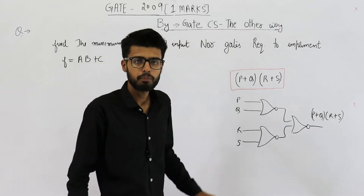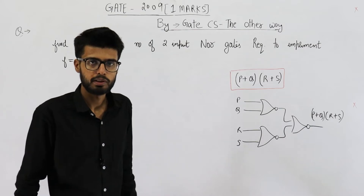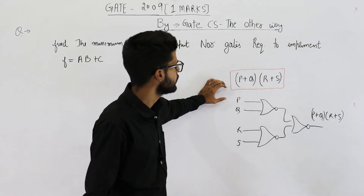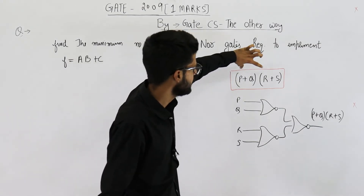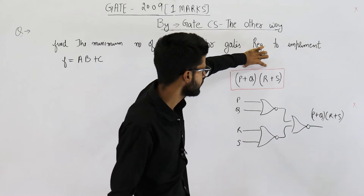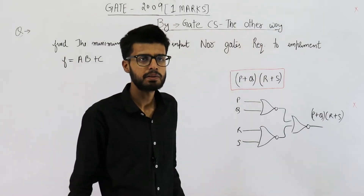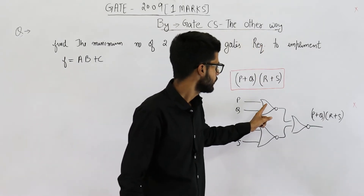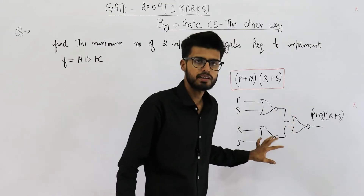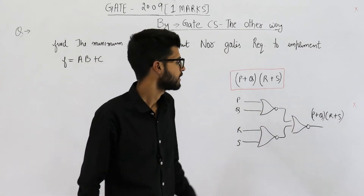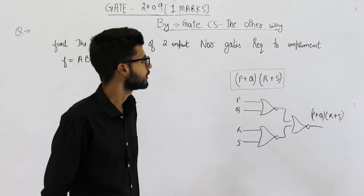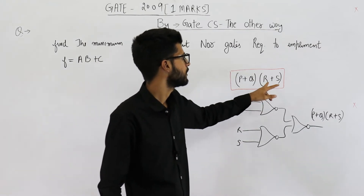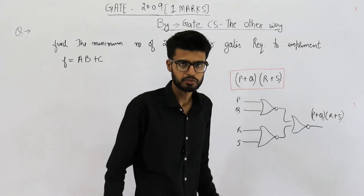For example, I've shown a POS form here. This is a standard formula. Whenever you have any expression of this form, it can be implemented using a structure of NOR gates as represented here. That means three NOR gates are required to implement such an expression.